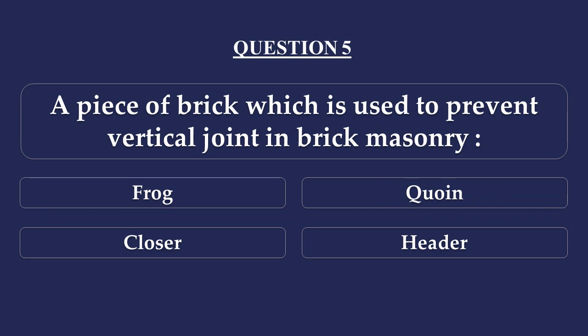Question number 5. A piece of brick which is used to prevent vertical joints in brick masonry: Option A - Frog, Option B - Queen, Option C - Closer, Option D - Header. The answer is Option C: Closer.